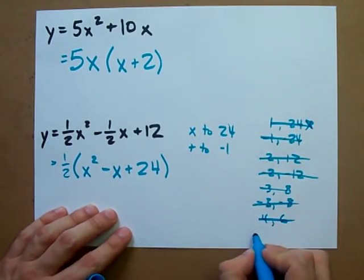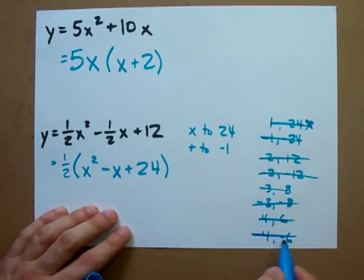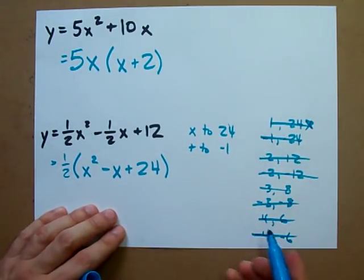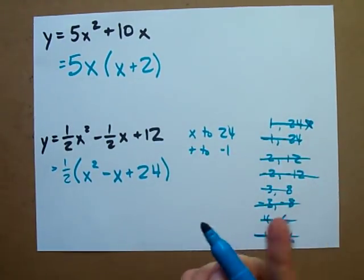What about negative 4 and negative 6? That also doesn't multiply to negative 1. You know what? I've exhausted all the pairs of numbers that multiply to 24.